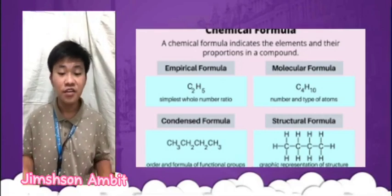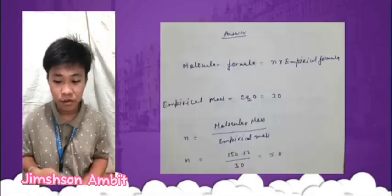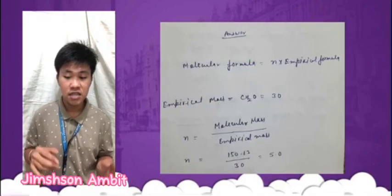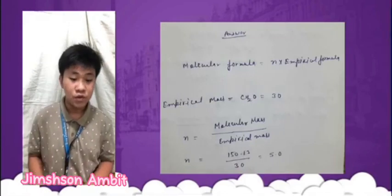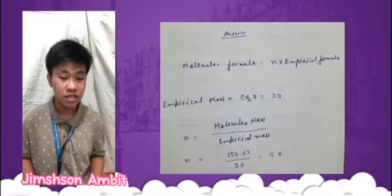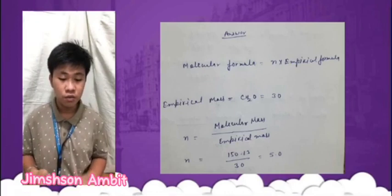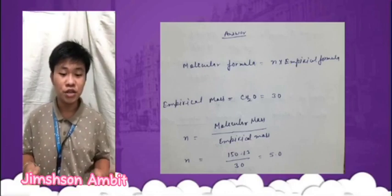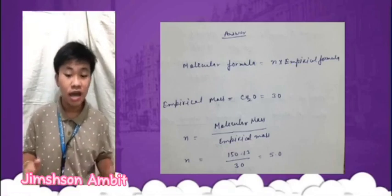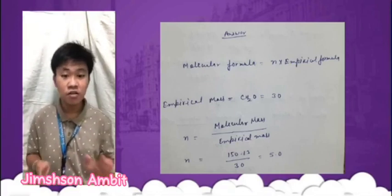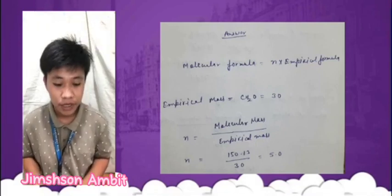For example, an empirical formula for glucose is CH2O, which shows that there is a 1 to 1 ratio of carbon, hydrogen, and oxygen atoms in glucose.